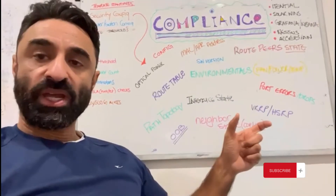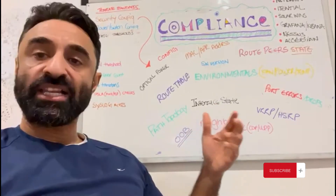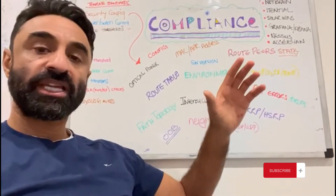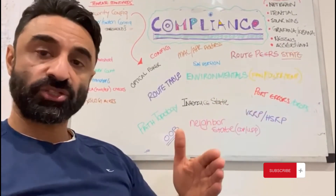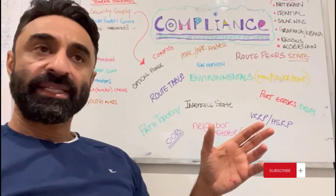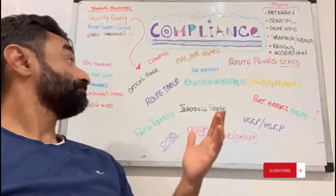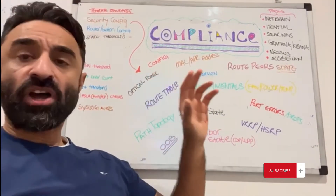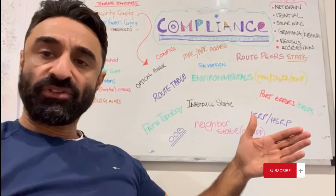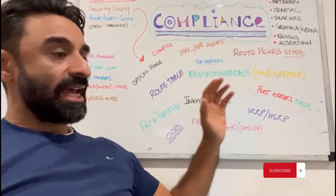You can go even more granular — that's where this compliance framework really becomes even more valuable to every team. Path topology checks, ensuring you've got a path from A to B, and you can keep comparing that path between critical services. Neighbor state checks, route table checks — checking a route table, depending on how big your network is, can be very useful. Optical power checking — your fiber optics power levels on your SFPs — can you go back and see if that's changed?